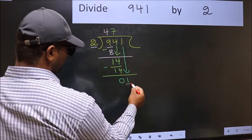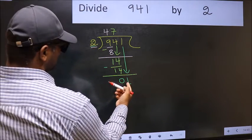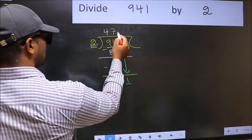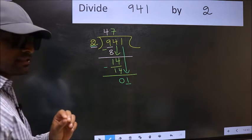Here we have 1 and here 2. 1 is smaller than 2. So what many do is, they directly put a dot and take 0. Which is wrong.